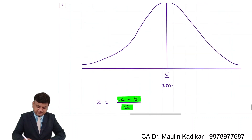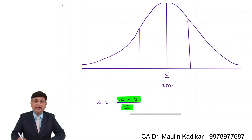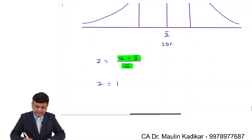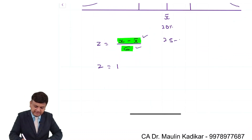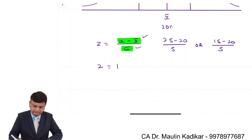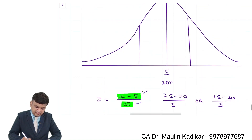If we look at the diagram, on both the left-hand side and right-hand side, we have 0.3413 as the area, corresponding to X̄ ± 1 standard deviation. The numerator equals the denominator, so: (25 − 20) / 5 = 1, and (15 − 20) / 5 = −1. In both cases the answer is 1 — positive or negative — with a Z-table reading of 0.3413.